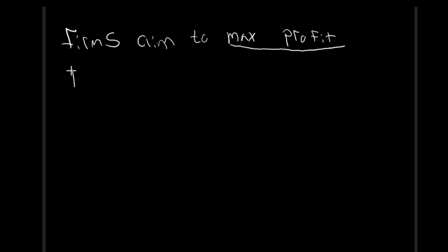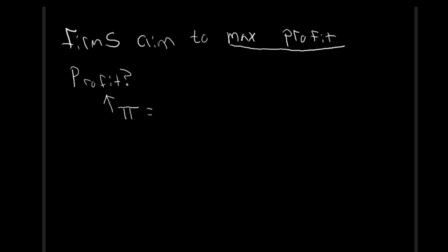So the question from that is: what is profit? We're going to make a shorthand notation and call profit pi — the Greek letter pi. We're going to say that pi, profit, is equal to our total revenue — all the money we make, TR — minus our costs, or in this case total costs. Total costs would be all of those costs added together.